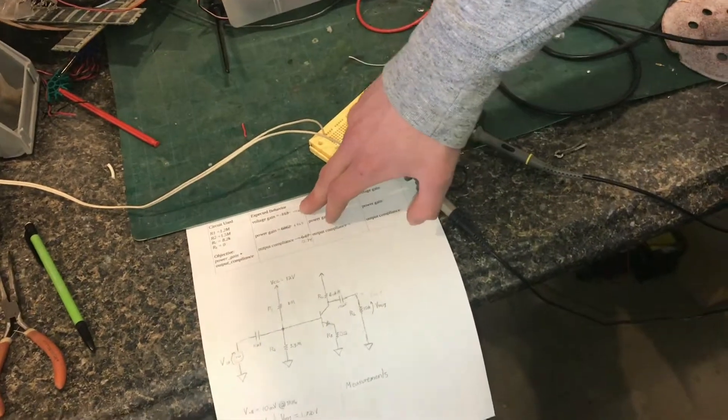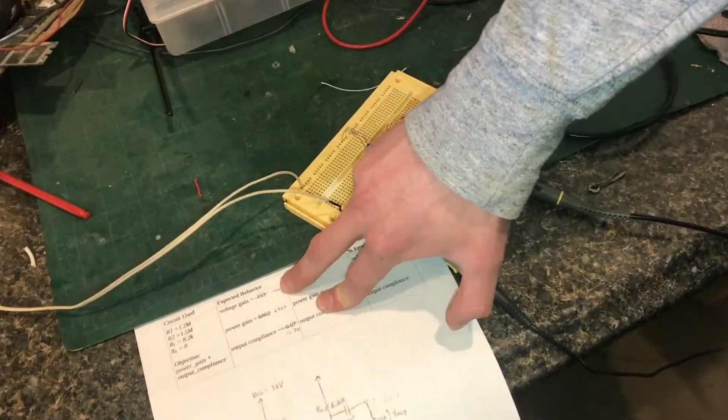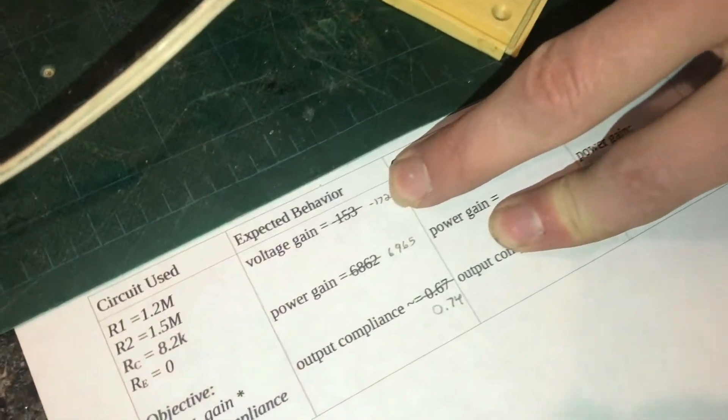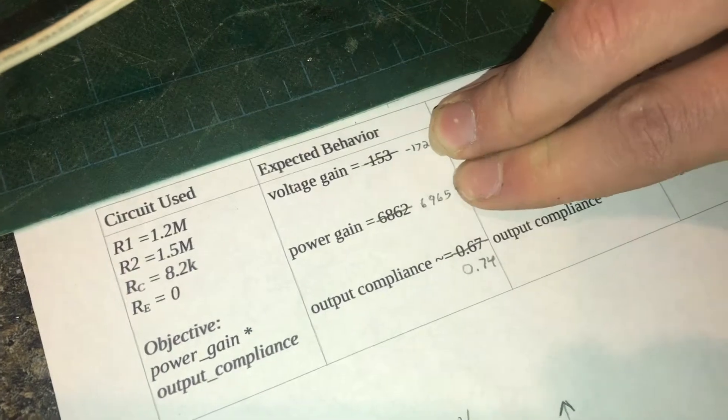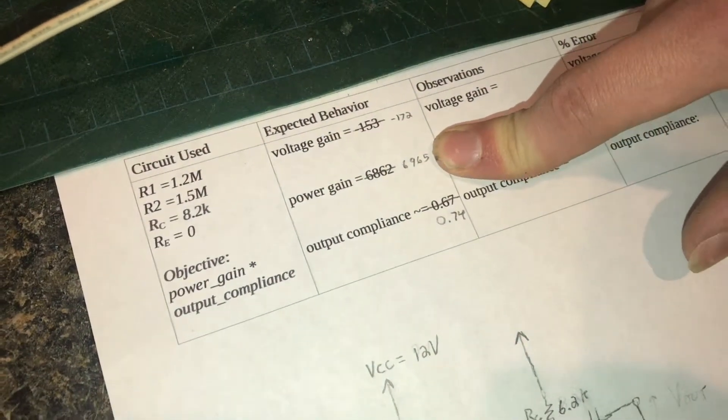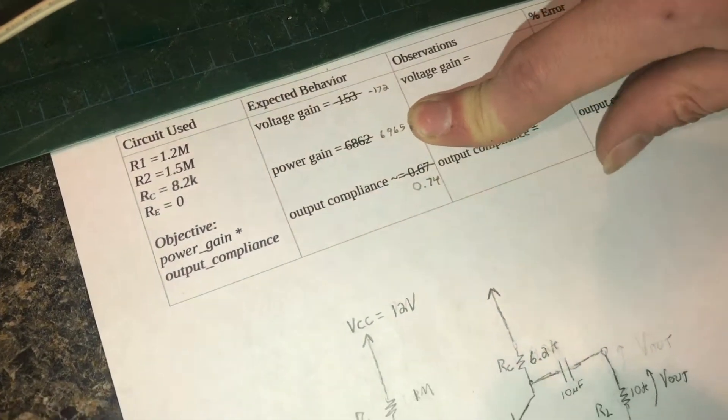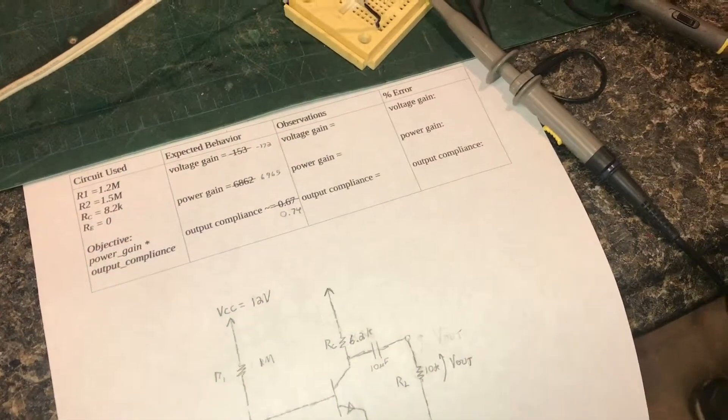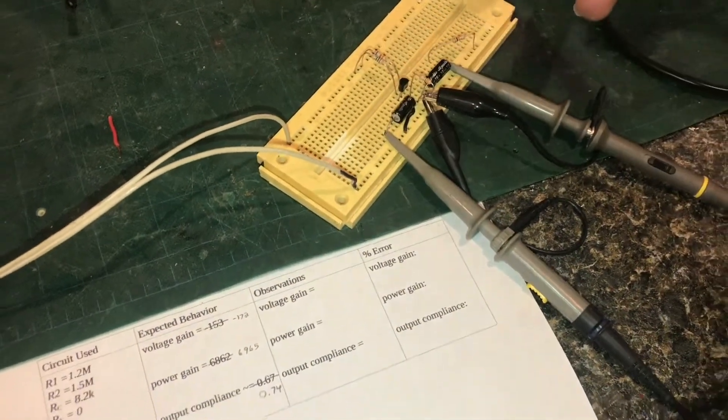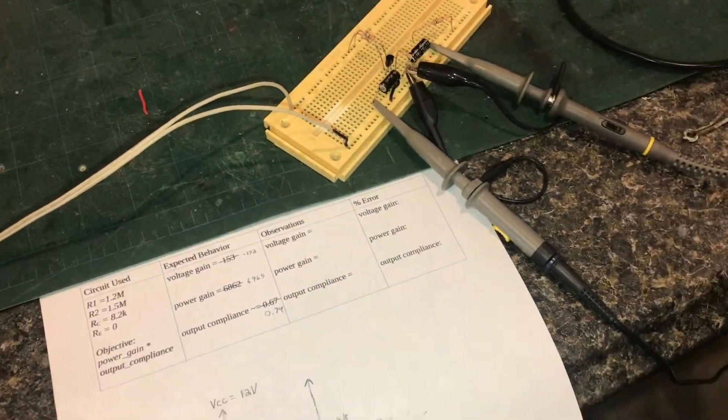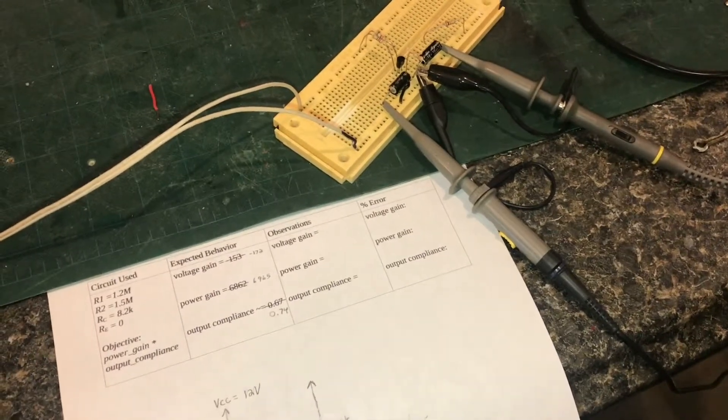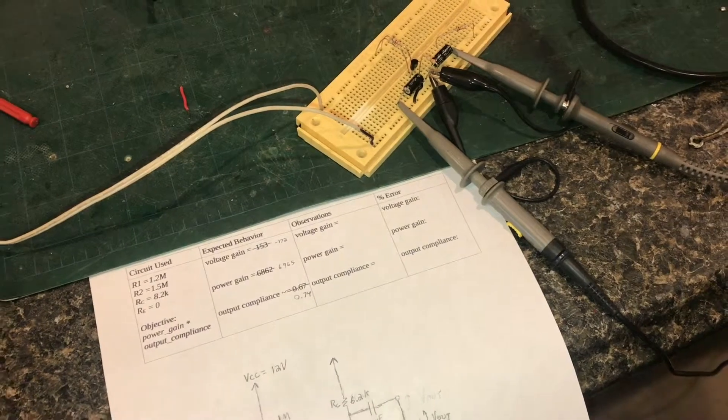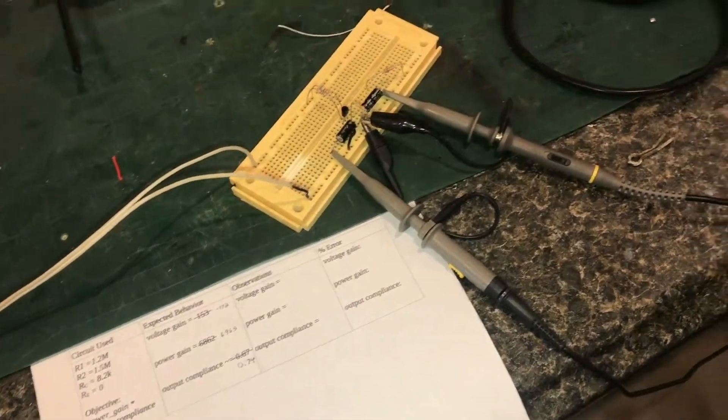Here I've calculated, actually the computer told me it should have a voltage gain of around 172, which is very good actually for a transistor class A amplifier, power gain of about six, seven thousand, and output compliance of seventy four percent, which means with twelve volt supply, seventy four percent of that is almost nine volts. So we should be able to see about nine volts on the output before it starts clipping.